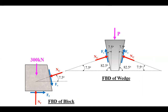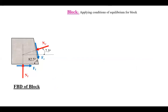To apply equilibrium equations, we consider which body to analyze first based on the number of unknowns. If we consider the wedge, the unknowns are P, Fc, and Nc — too many. So we consider the block first, where the unknowns are Nc, Nf, and Ff, which is more tractable. We apply the equations of equilibrium to the block and solve. Given alpha equals 10 degrees, mu equals tan(10°) which is 0.1763.